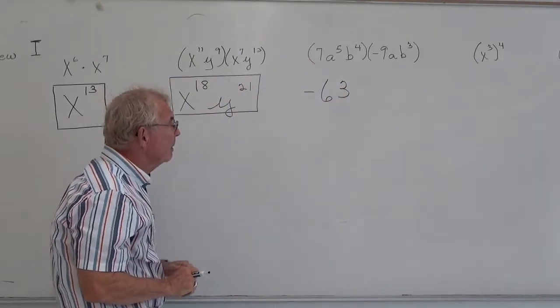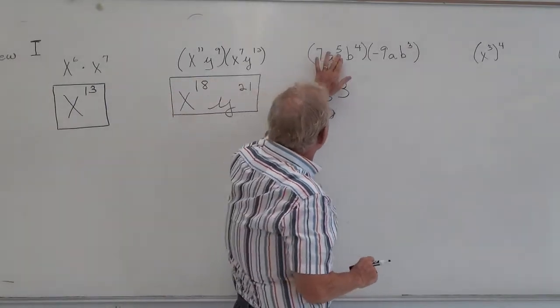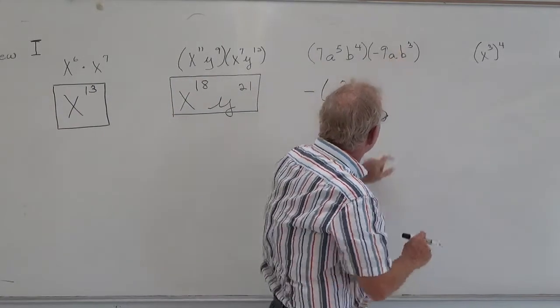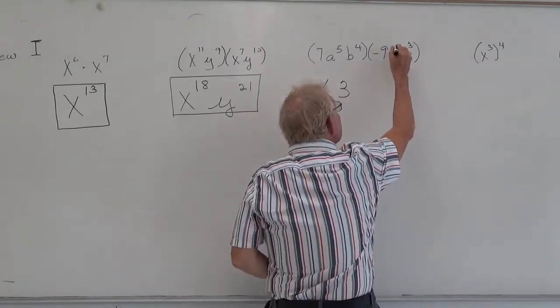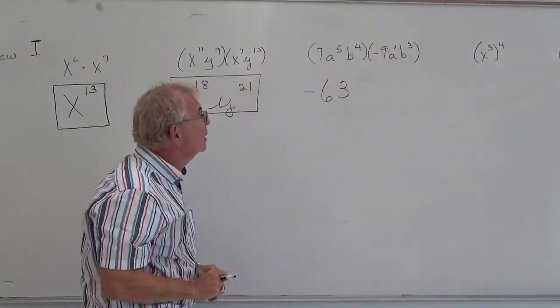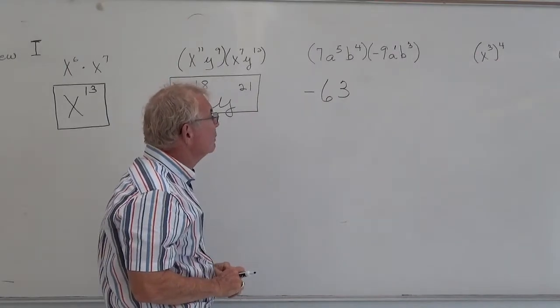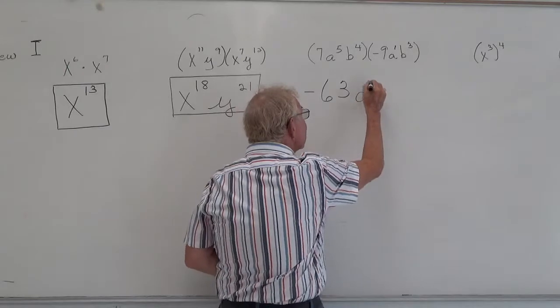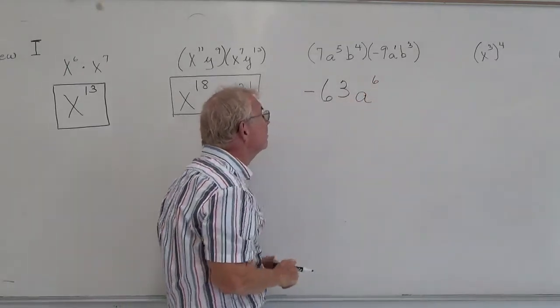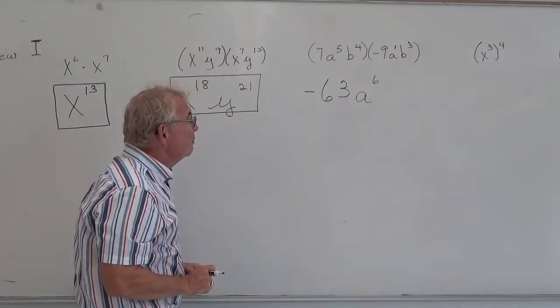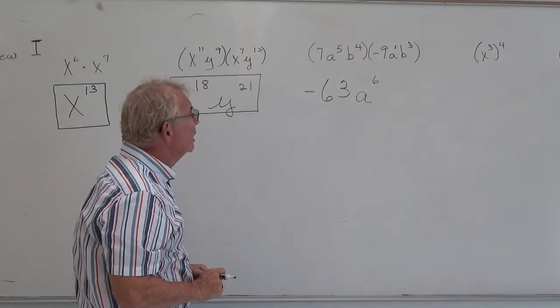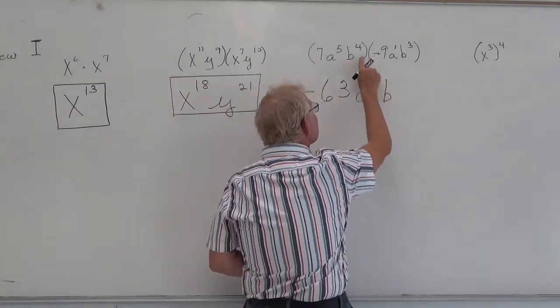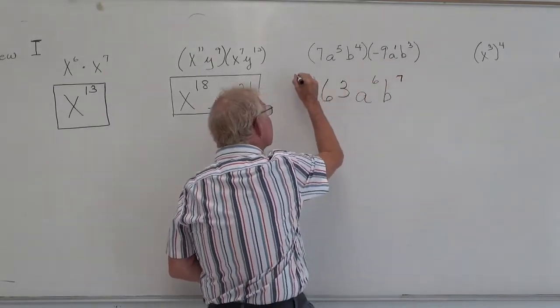Then we take the exponents, base of a. Now this has an exponent of 5, this doesn't have an exponent, but if it makes you feel better, you put a 1 there. If it's not written, it's understood. So then you add the 5 to the 1 and get the exponent of 6. On base b, you have an exponent of 4 and an exponent of 3, and you add them and get a 7.